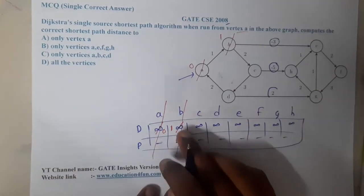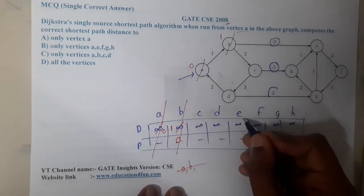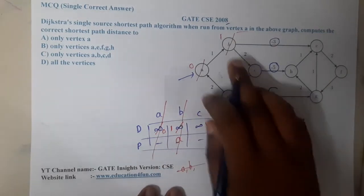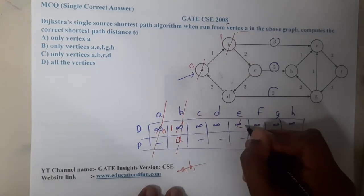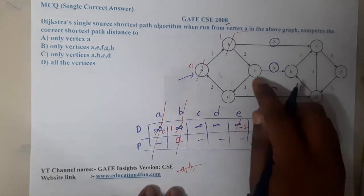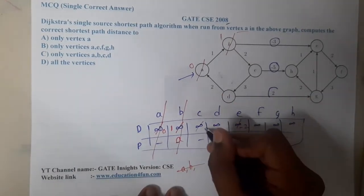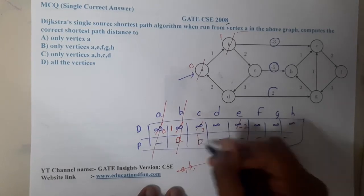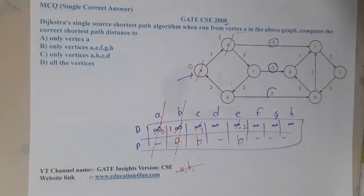From b wherever I can go, I can go to e with a cost of minus 3, so 1 minus 3 is minus 2. Similarly, I can go to c, 1 plus 2 is 3. So for both of them I can go with the help of b.